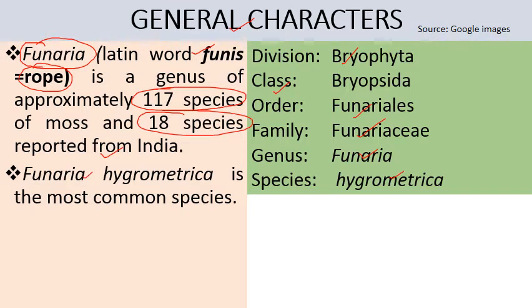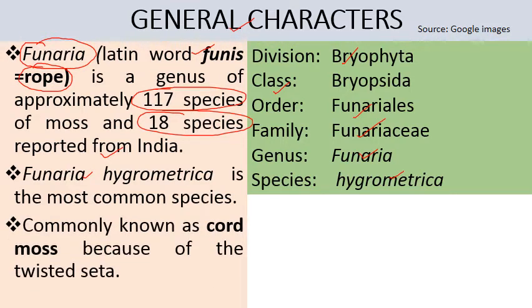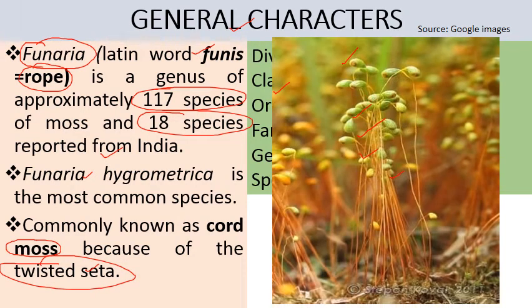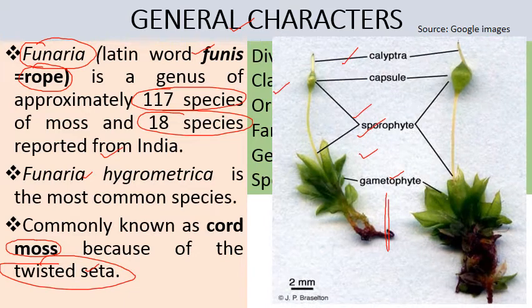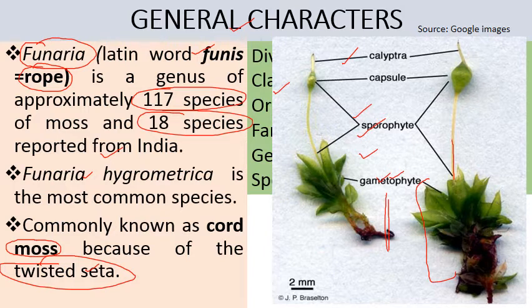Funeria hygrometrica is the most common species and is commonly known as cord moss because of its twisted seta. The seta structures are twisted around each other, which is why it is called cord moss. The plant body is the gametophyte. In photographs you can see the gametophyte as the main plant body, with the stalk-like structure known as seta, and the capsule — these together form the sporophyte.